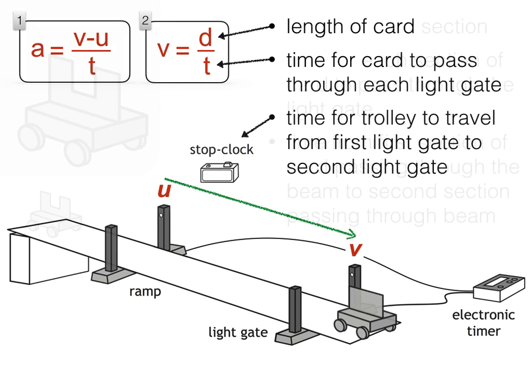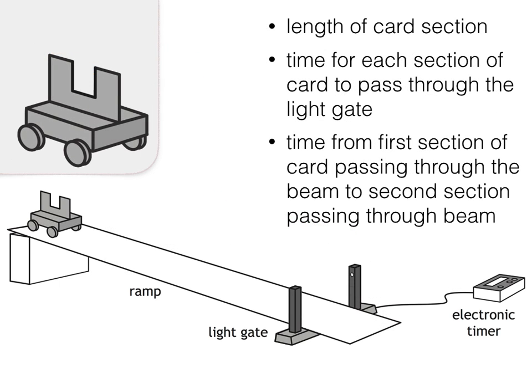Here's one last experiment you might have seen. The card placed in the trolley is now replaced with one which has two sections, as shown in the diagram. When the trolley moves down the slope, the card now passes through the light gate two times.